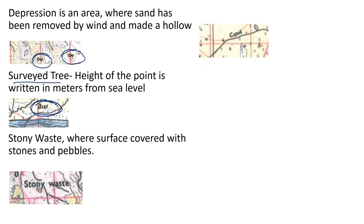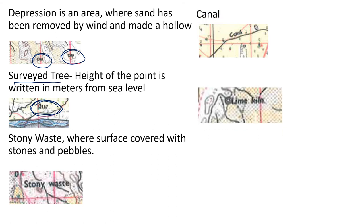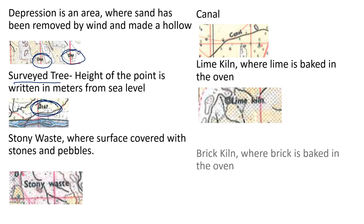Canal — there is one canal in 45D/7 and 45D/10. Black color means it is a non-perennial canal, and the word canal will be written next to that symbol. Then lime kiln, where lime is baked in an oven, is labeled as lime kiln.